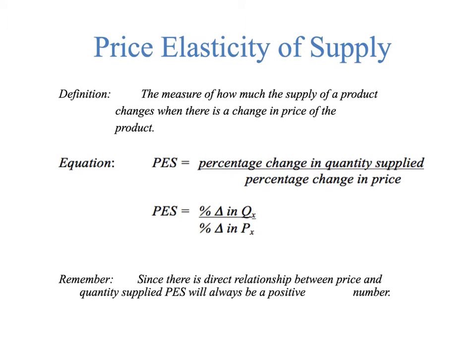A simple definition: price elasticity of supply is the measure of how much the supply of a product changes when there is a change in price of the product. We're talking about the same product here. So a change in price — how does it influence suppliers? This is something you have to flip around, because we spend our lives as human beings more or less demanding things, buying things.